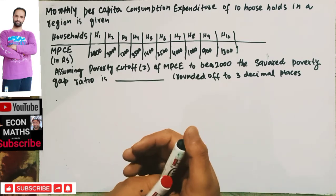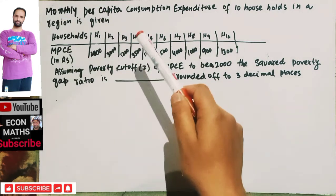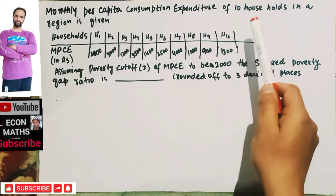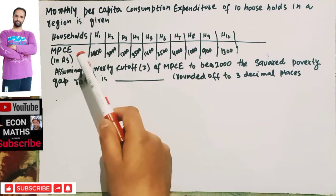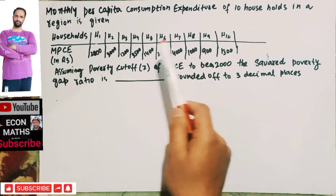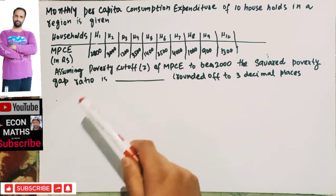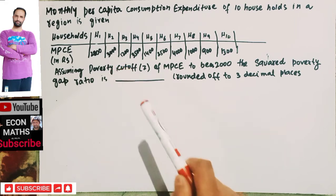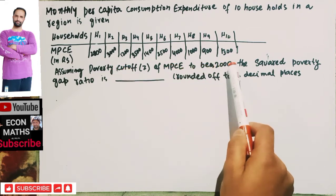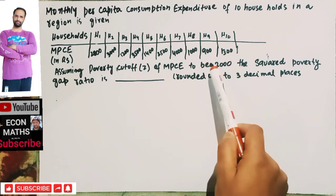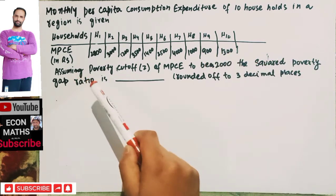A question from the JM Economics paper of 2022 is: the monthly per capita consumption expenditure of 10 households in a region is given. We have 10 individuals h1, h2, up to h10. Assuming a poverty cut-off — what we call the poverty line — of monthly per capita consumption expenditure equal to 2000 rupees, the squared poverty gap ratio is to be found.